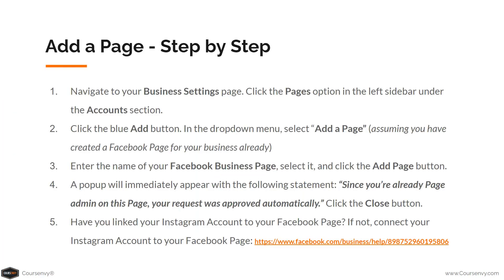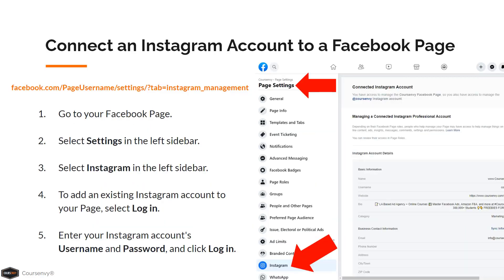Make sure to download the PDF to review these steps for adding a page. If you have an Instagram account for this specific Facebook page brand, you'll want to link it with this Facebook page so you can place ads not only on Facebook but Instagram as well. Navigate to your Facebook page, click settings in the left sidebar, select Instagram on that settings page, then log into the brand's Instagram account. This brand's assets are now linked.